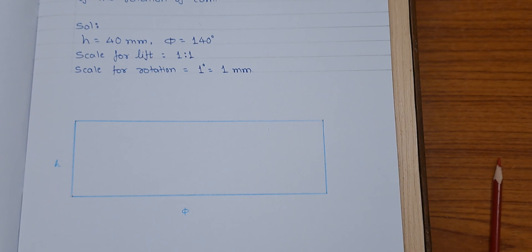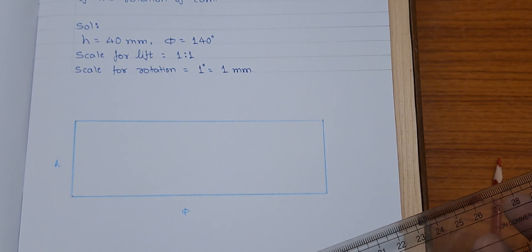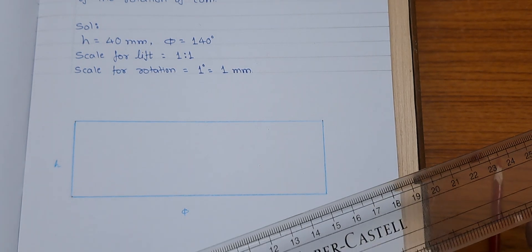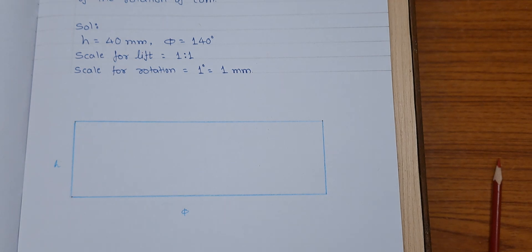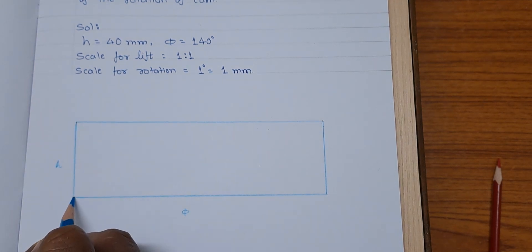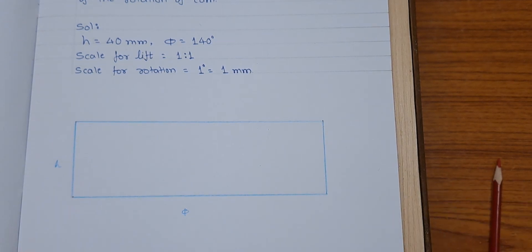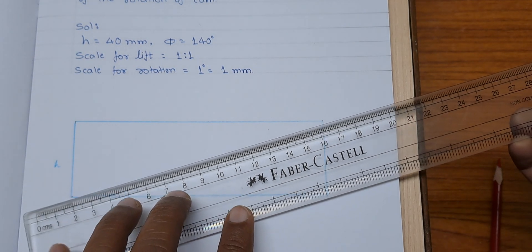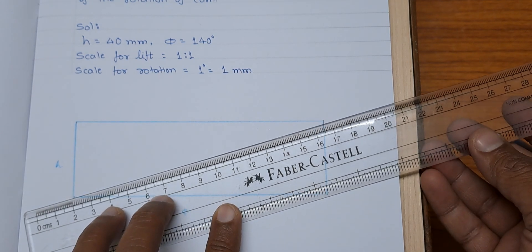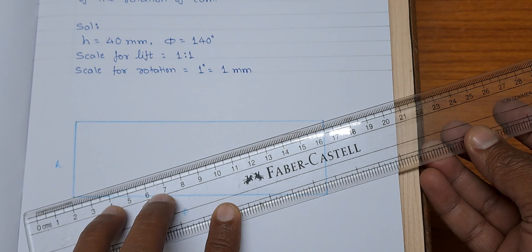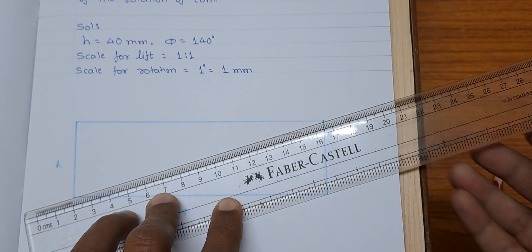It will be a straight line joining the diagonals from the starting of the lift to the end of the lift. Connecting these two corners and preparing a diagonal will give the displacement curve for the given condition.